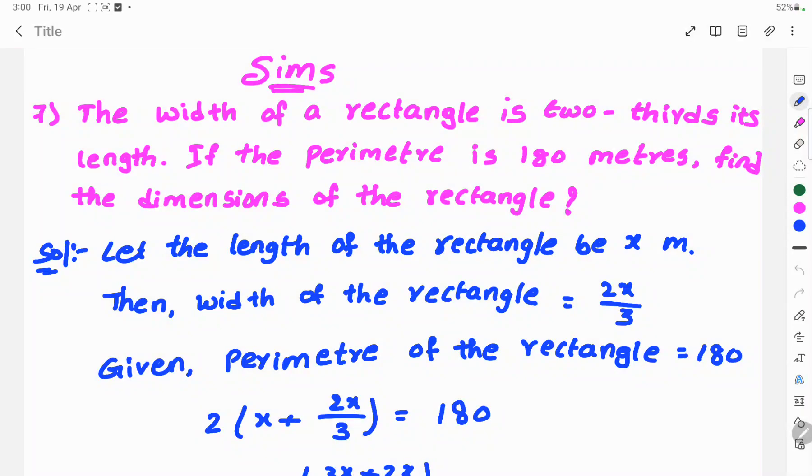Hi, welcome to Sims. Today's lesson: the width of a rectangle is two-thirds its length. If the perimeter is 180 meters, find the dimensions of the rectangle.